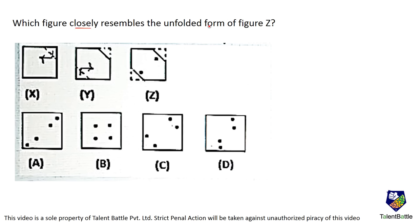Which figure closely resembles the unfolded form of figure Z? This is the unfolded paper. First this part gets folded from the outside, then this part gets folded from the outside and we have this paper. The dark lines indicate the paper; there are two cuts or marks made. This part is folded over this part from the other side, so if a mark is here the mark also comes over here. This part was also folded from the outside, so if there is a cut here, a cut also comes over here. Totally if you unfold it there are going to be four cuts in a straight line. Option A is the answer.